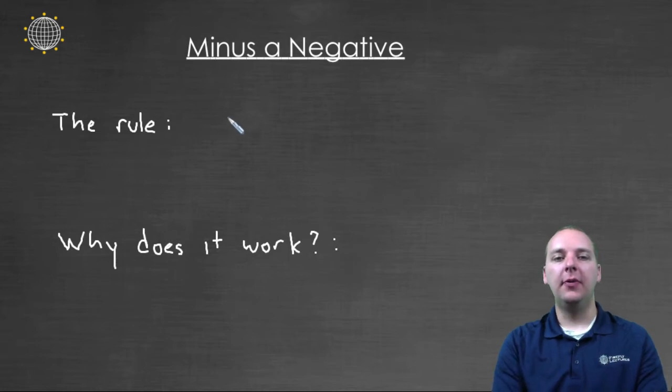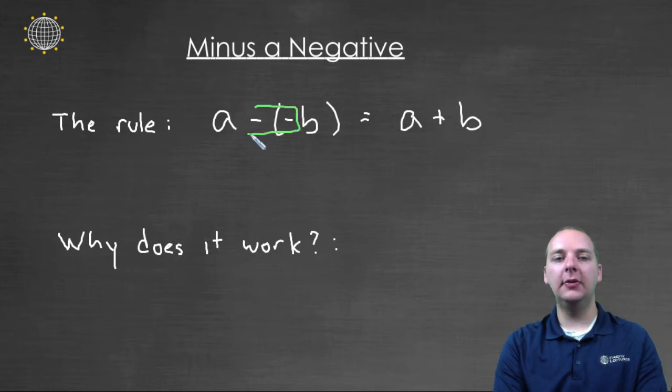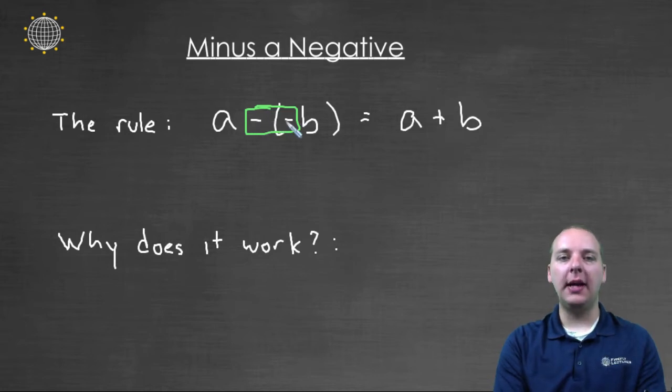So first of all, here's the rule. If you have one quantity minus the negative of another quantity, this is equivalent to simply taking a plus b. Sometimes you will hear students say two negatives make a positive. And so what happens is if you have a minus a negative, you turn that into a plus sign, and then you just add as normal.